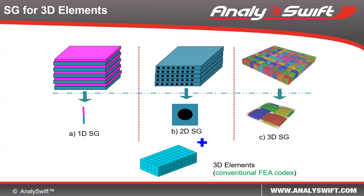SWIFT-CON performs homogenization over these structure genomes to compute the effective 3D properties as inputs for 3D structure analysis. After the structure analysis, SWIFT-CON also performs de-homogenization over the structure genomes to compute the local stresses, strains, and failure indices.